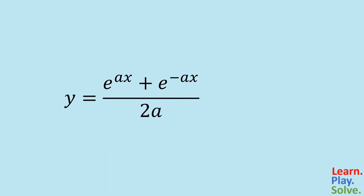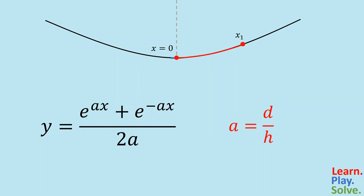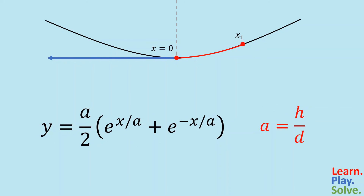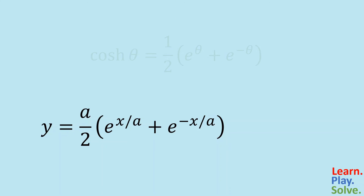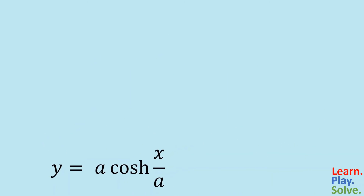Remember that the constant a in this equation represents the ratio of the density of the cable to the amount of horizontal force pulling at its vertex. We could have just as easily flipped that ratio and called it h over d, in which case the equation would look different. What's surprising is that this can be represented by the hyperbolic cosine function. If we replace the angle theta with x over a, we get a times the hyperbolic cosine of x over a — this cleans up very nicely for something so natural.